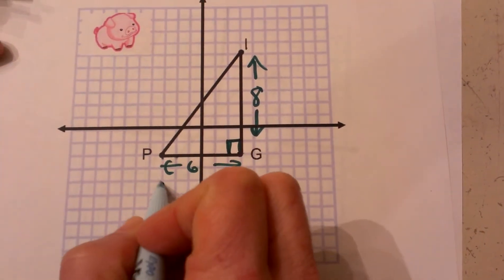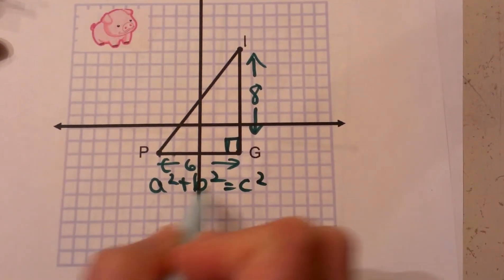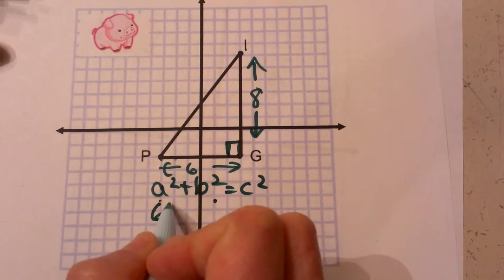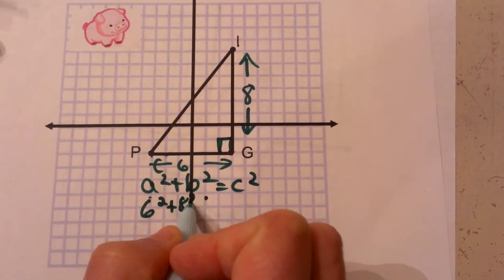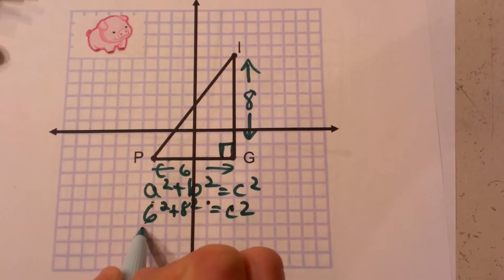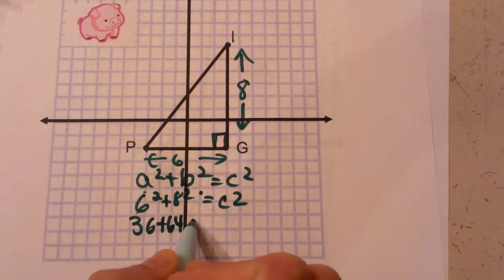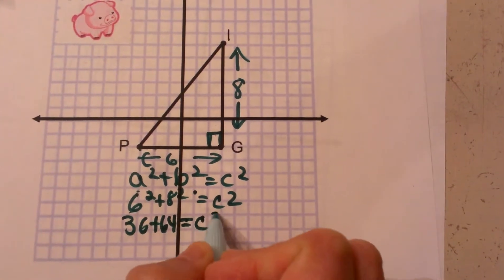A squared plus B squared equals C squared, where A and B are the two legs that we know. So that's going to be 6 squared plus 8 squared, and we're going to set that equal to C squared. Well, 6 squared is 36, 8 squared is 64, and that is equal to C squared.